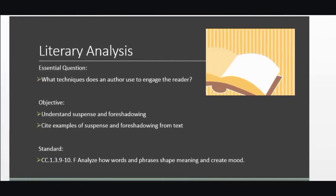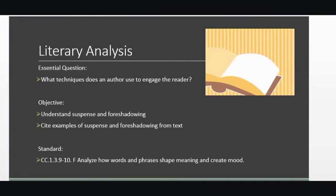Hello ladies and gentlemen and welcome to this lesson. This lesson is on literary analysis and the essential question is what techniques does an author use to engage the reader? The objectives for this lesson are to understand suspense and foreshadowing and cite examples of suspense and foreshadowing from text. And this deals with your standard CC.1.3.9-10.F to analyze how words and phrases shape meaning and create mood.